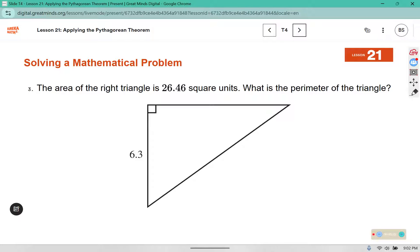The area of the right triangle is 26.46 square units. What is the perimeter of the triangle? So this is a multi-part question. We know that you can find the area of a triangle by using half the base times the height. Well here I have the height. This would be represented by the base. So let's plug in pieces of information we know. The area is 26.46. The half stays. B remains B and the height is 6.3.